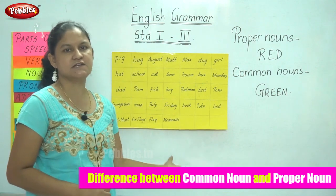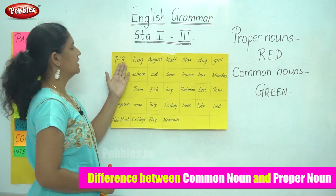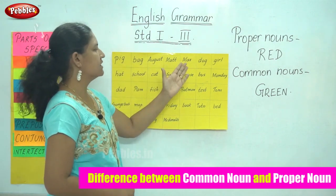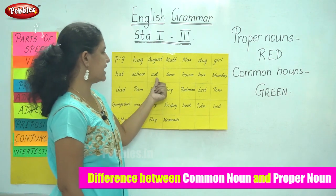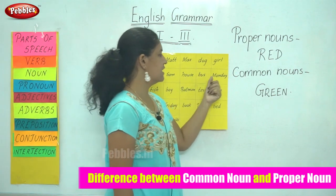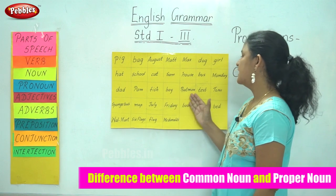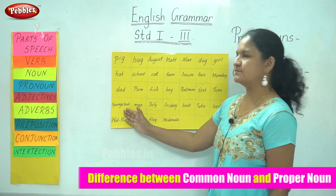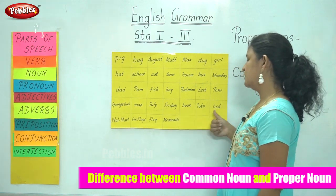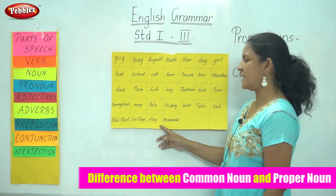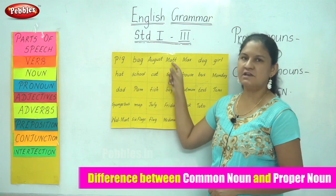First I am going to read all the nouns that are written on the chart, and then we will do each word individually. The words are: pig, bag, August, mat, max, dog, girl, hat, school, cat, Sam, house, bus, Monday, dad, Pam, fish, boy, Batman, test, Tom, Spongebob, map, July, Friday, book, Toto, bed, Walmart, Six Flags, flag, and McDonald's. Now we are going to go through each noun and decide whether it is a proper noun or a common noun.